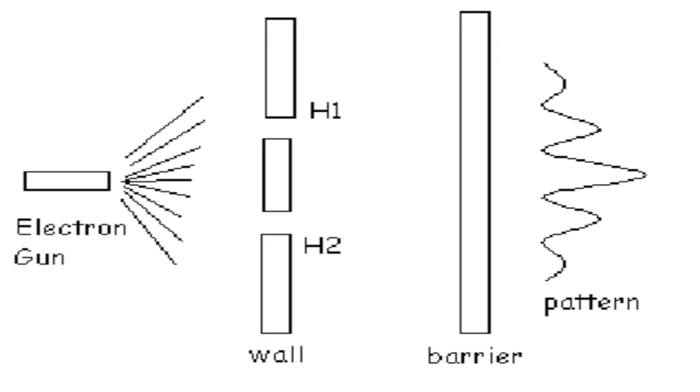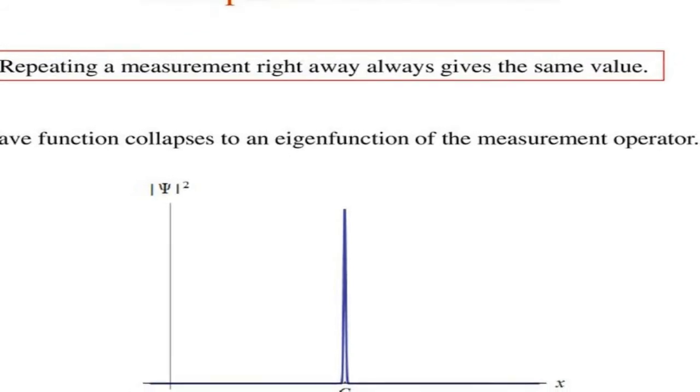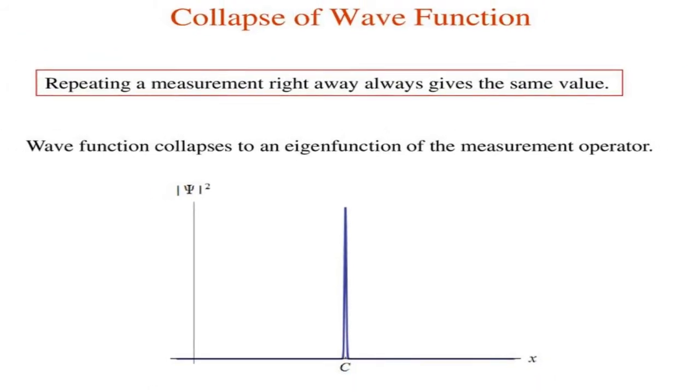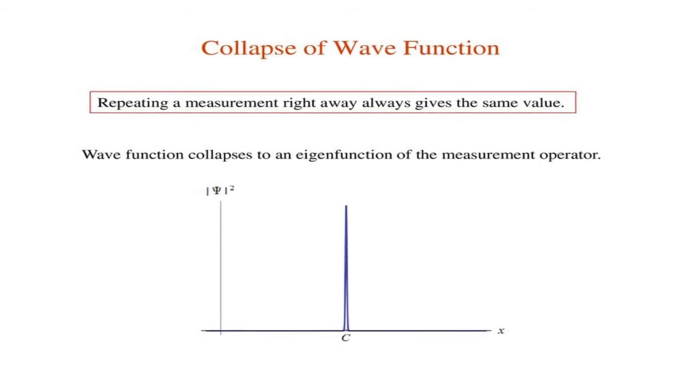But it doesn't stop there. If you look very closely to check where it is, it's as if the electron knows that you are looking for it. So it decides on a position it should be in. And at that point, it is a particle.